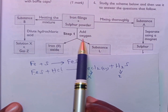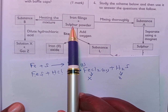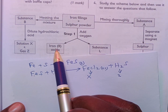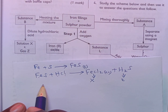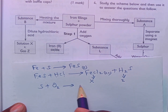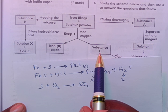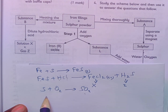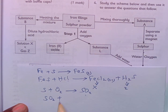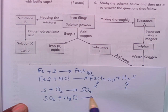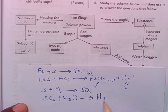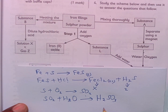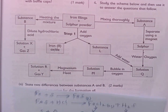Moving down, iron filings react with oxygen to give us iron(II) oxide. Then sulfur reacts with oxygen to give us sulfur dioxide gas, substance L. That sulfur dioxide is then dissolved in water to give us H₂SO₃, which is sulfurous acid — this is solution Q.